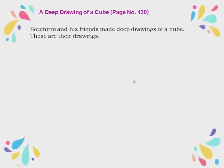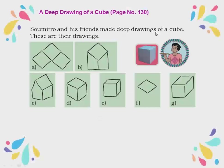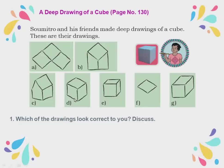A deep drawing of a cube, page number 130. Saumitra and his friends made deep drawings of a cube. Looking at the drawings, D, E, and G look correct — they look like a cube, with only slight size differences. The others do not correctly represent a cube.